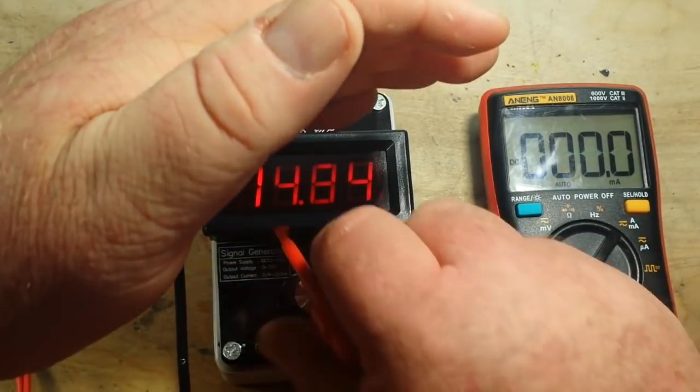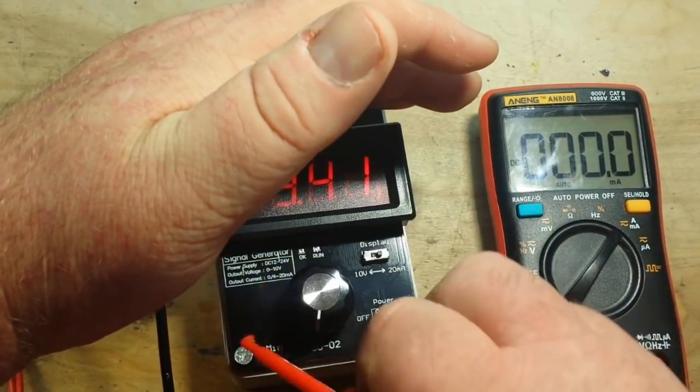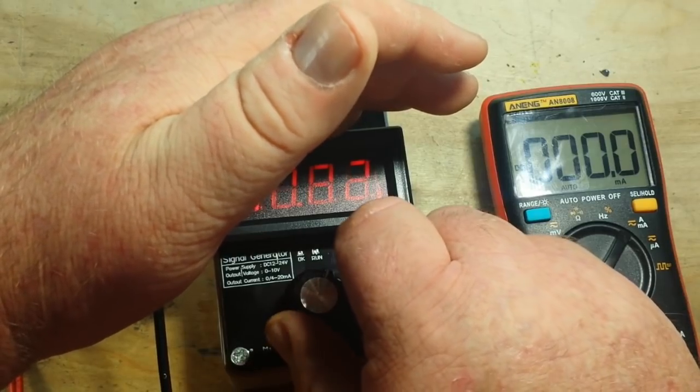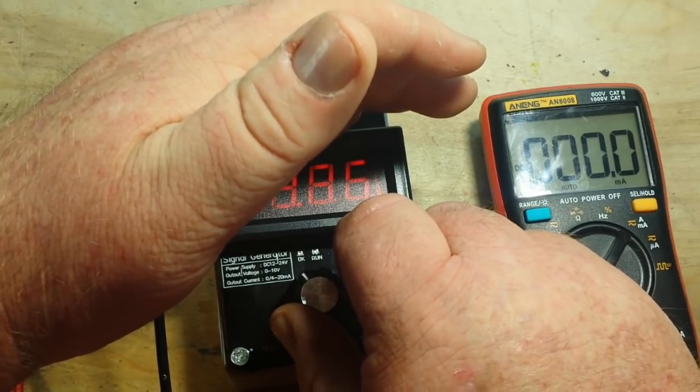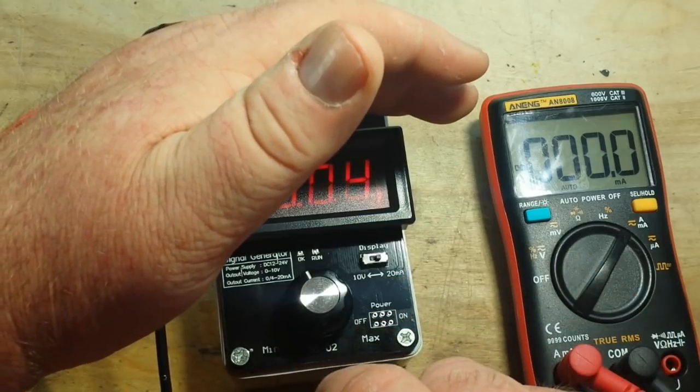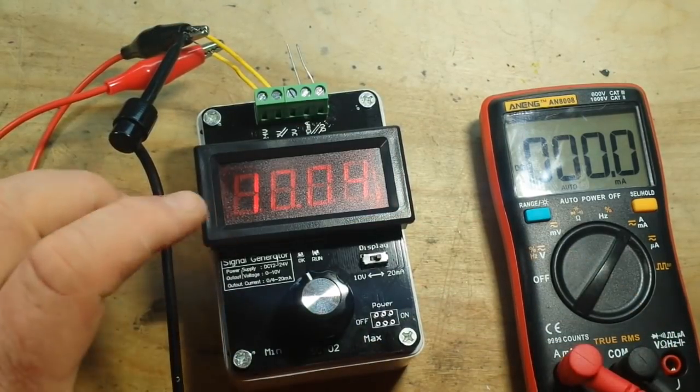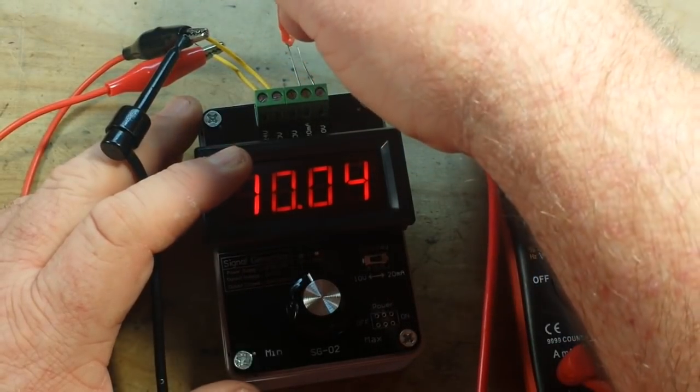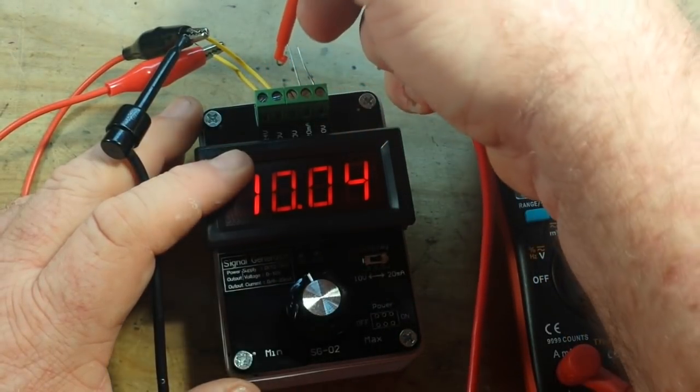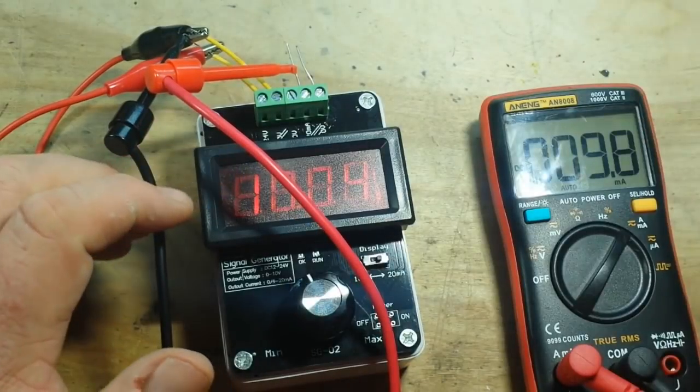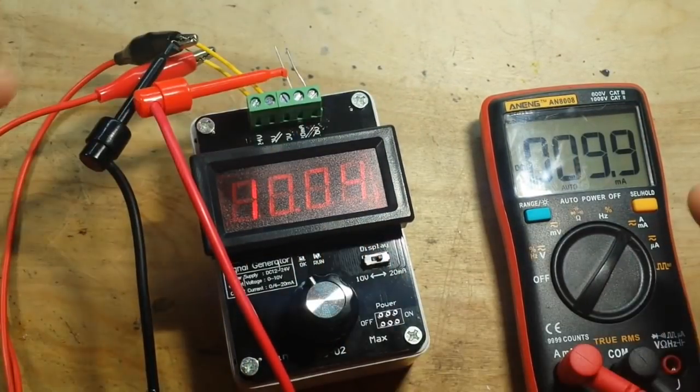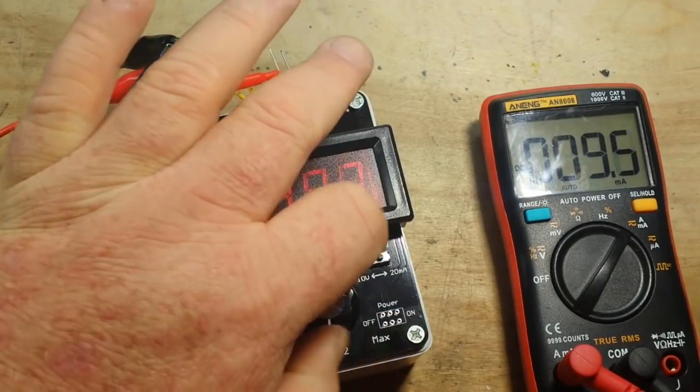So we'll turn this down. Let's get about 10 milliamps on here. Now we can hook up here to our milliamp reading. There you go. We're showing 10.04 here, 9.9 here. We can take it down or we can take it up.